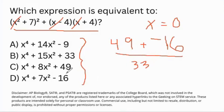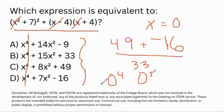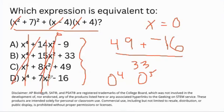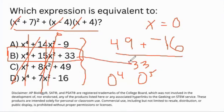Now notice our answer choices. Let's go ahead and substitute x with 0. Anything raised to the 4th, 5th, and so on at the value of 0 is just going to be 0 — those terms are eliminated. The same thing happens with squared terms when you substitute 0. So we have 0 plus 0, and we're just left with our answer choices. The best answer is B, because the answer we solved is 33, and we see here that it's 33.